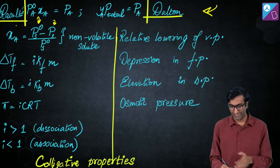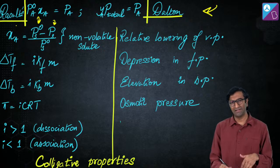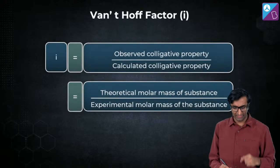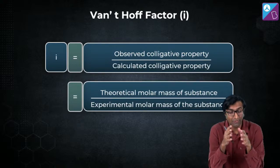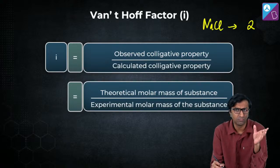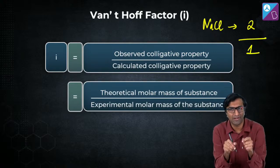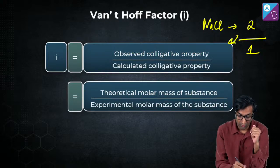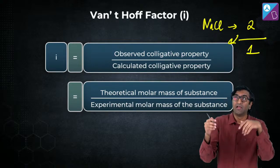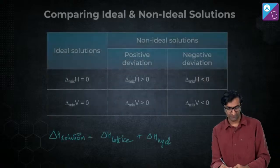This summary covers all colligative properties — with this you'll get full marks on this topic. i is defined as observed colligative property divided by calculated colligative property. For example, NaCl gives two ions per molecule, so i = 2. If molar mass is involved, i = theoretical molar mass / experimental molar mass, because more particles means lower apparent molar mass — they're inversely proportional.